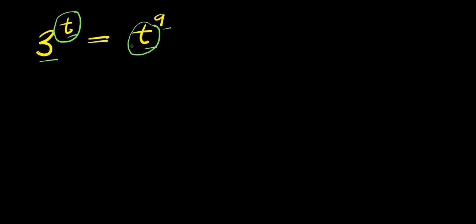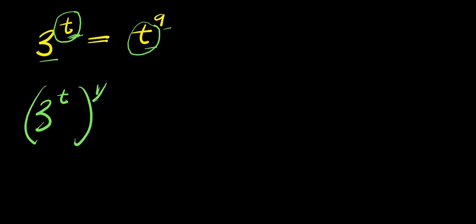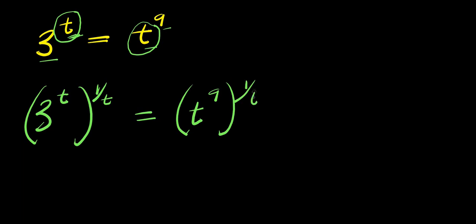What we can do at this point will be to move all the variables to one part of this equation. I can decide to eliminate this t right here. So I'm going to have 3 to the power of t, and for me to do that I can raise this to the power of 1 over t. And this equals t to the power of 9, and also raise it to the power of 1 over t.